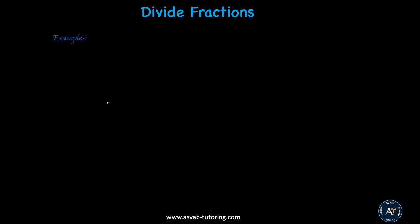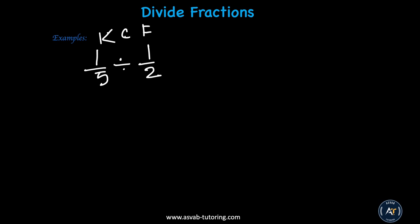Now we'll learn how to divide fractions. Take 1 fifth divided by 1 half. To divide two fractions, you need to know the rule called K-C-F — Keep, Change, Flip, like Kentucky Fried Chicken. Keep the left side as 1 fifth, change the division sign to multiplication, and then flip the second fraction. Multiply top to top and bottom to bottom: 1 times 2 over 5 times 1 gives you 2 over 5.